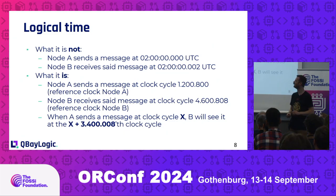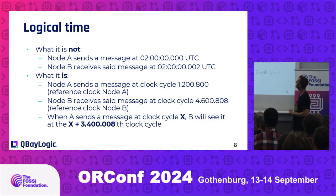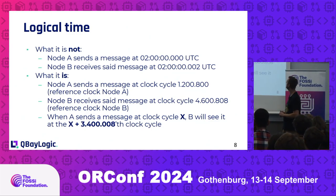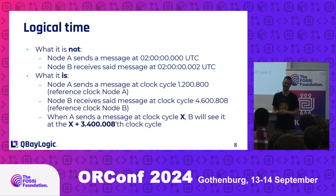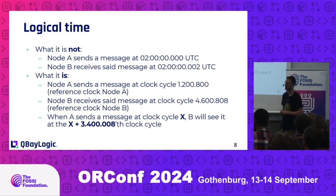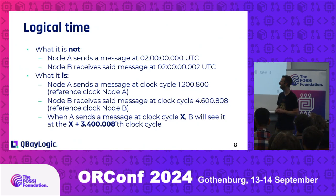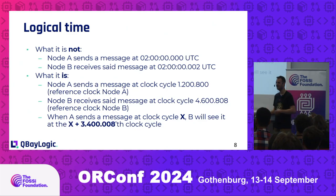What logical time is not: if we have a node A that sends at atomic clock UTC 2 in the morning, and then B receives it 2 milliseconds later, again referenced to some atomic clock — that's wall clock time. What logical time is: node A sends a message at clock cycle 1,200,800 referenced to its own clock, sending it to B. And then B receives it at clock cycle 4,600,808, for example, referenced to its own clock B.